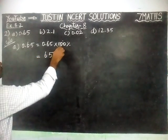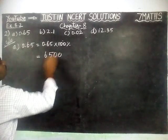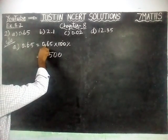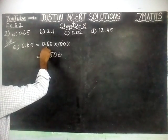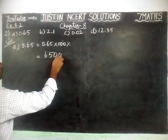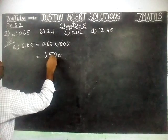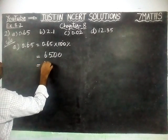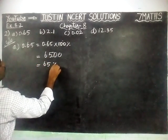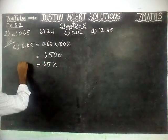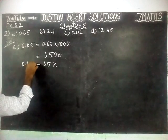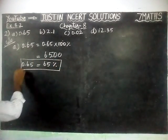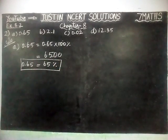And here we have 2 zeros, so we added 2 zeros. And here we have 2 decimal places. So from the right hand side, 1, 2 — we place the decimal point after 2 digits. So the answer is 65%. Therefore, 0.65 is equal to 65%.